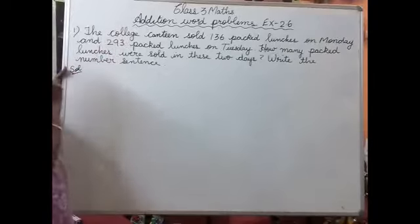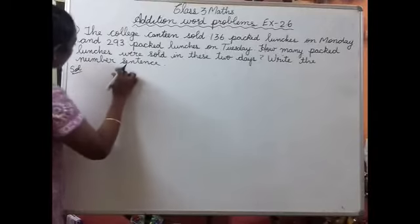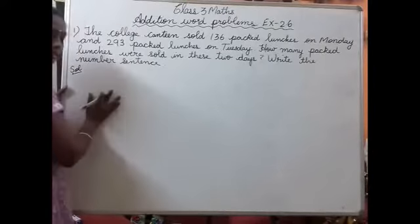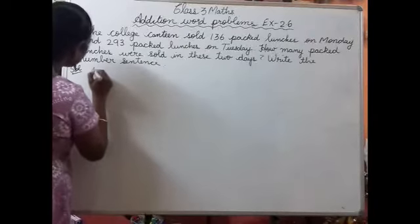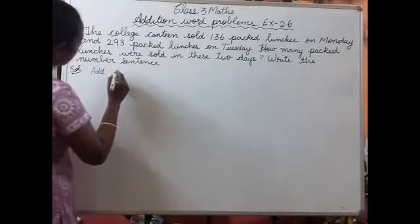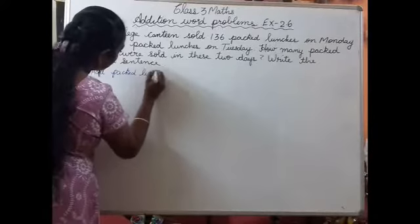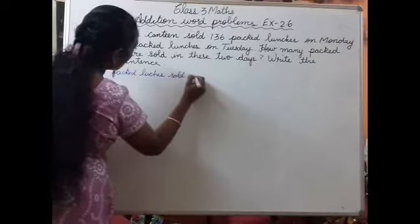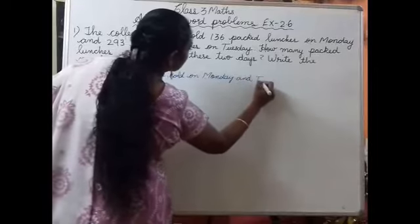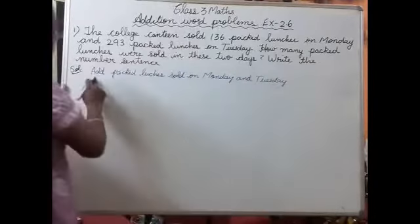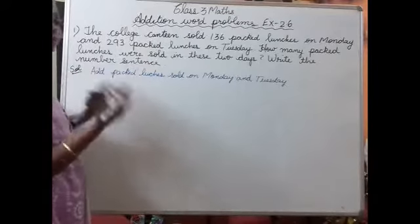We have to write the number sentence also. This is a word problem and we have to write the sentence. We have to add packed lunches sold on Monday and Tuesday. What we have to do? We have to add packed lunches sold on Monday and Tuesday - Monday and Tuesday ki din jitani packets us ne sale kia hai, we have to add both the numbers.